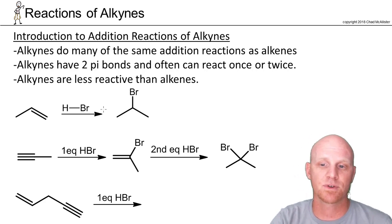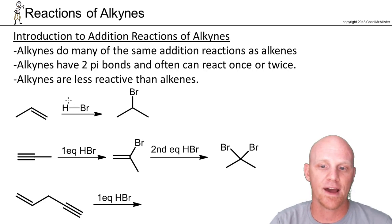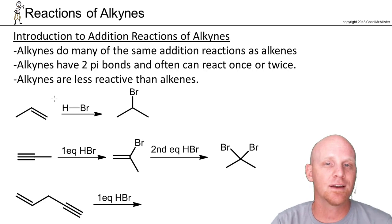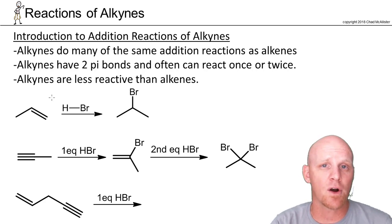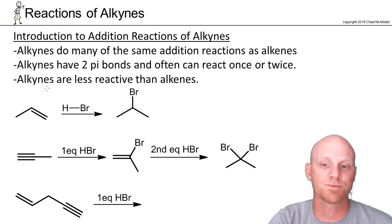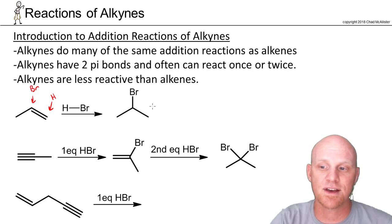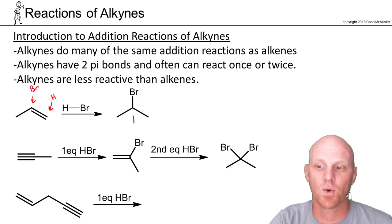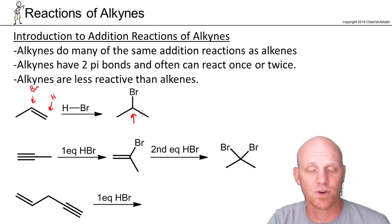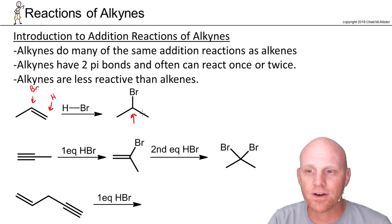If you recall what we saw with alkenes: when I add HBr to an alkene, it adds H and Br. This is hydrohalogenation and it goes Markovnikov, so we add the H to the less substituted side and the bromine to the more substituted side and get the corresponding alkane. It goes through a carbocation intermediate, and we'll talk more about that later.